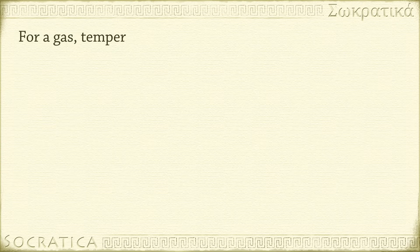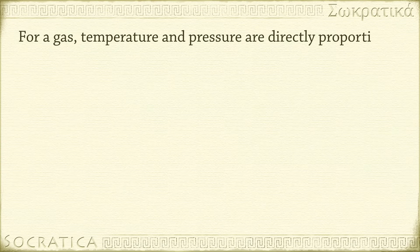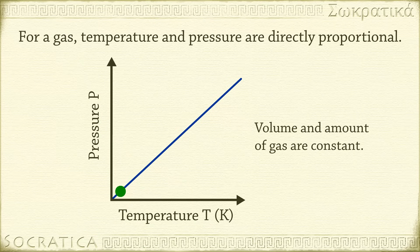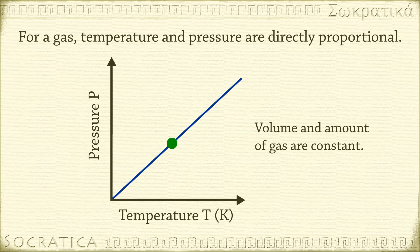For a gas, temperature and pressure are directly proportional. When you keep everything else constant, as the temperature of a gas goes up, its pressure goes up. As the temperature of a gas goes down, its pressure goes down.